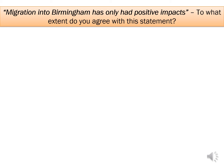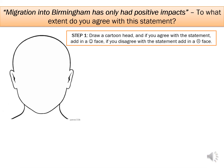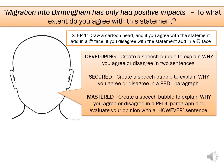The final part of today's learning journey is to start doing evaluation, which is so important in geography. The statement is: 'Migration into Birmingham has only had positive impacts — to what extent do you agree?' First, draw a cartoon head: a smiley face if you agree it has only had positive impacts, a sad face if you think it also has negative impacts, or a straight face if you're unsure. Then create a speech bubble explaining why you agree or disagree in two sentences, providing some evidence.